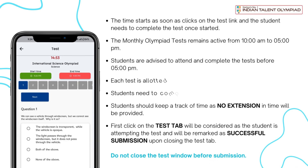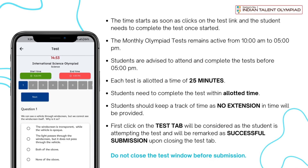Important Guidelines: Time is of the essence. The clock starts ticking the moment you click on the test link. Each monthly Olympiad test is available from 10 a.m. to 5 p.m., so you need to complete it within this time frame. You have 25 minutes to complete the test. Remember, there's no time extension.